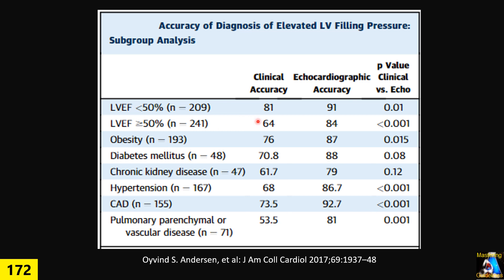Not only that, but the guideline is not applicable in patients with severe arrhythmia, especially atrial fibrillation or flutter, or completely irregular rhythm, or patients on a ventilator, or with acute respiratory distress syndrome. In those situations, guideline accuracy drops, and usually we don't have at least two of the four required parameters.